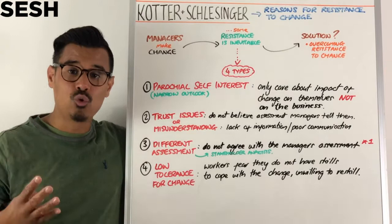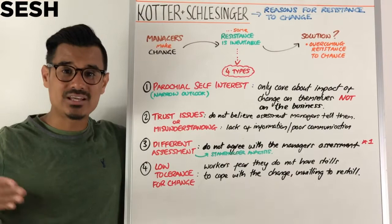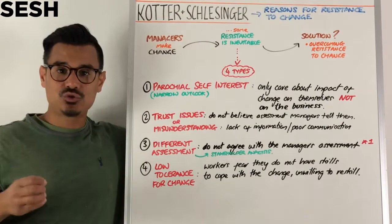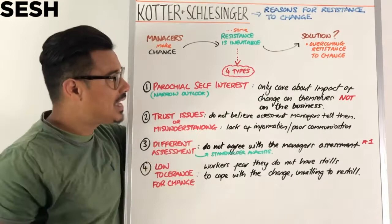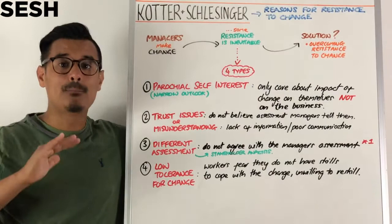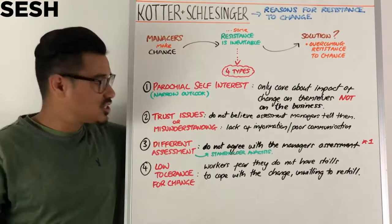For more details on the six solutions, click the card up there. Now, what are the four types of resistance likely to exist when managers make change? The first is parochial self-interest, which basically means individuals who have a narrow outlook — they just look at themselves and not the business. When the change happens, they only care about the impact of the change on themselves, but not on the business.